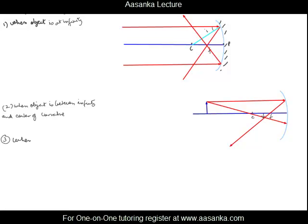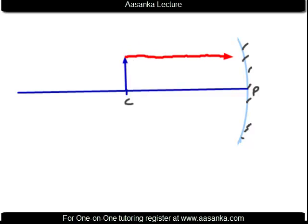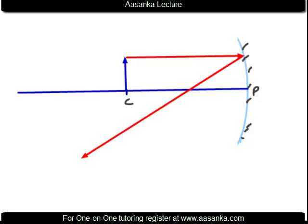The third case is when the object is at the center of curvature. In this figure, we have the center of curvature and the pole. With the object placed at the center of curvature, we again use the first ray: a ray parallel to the principal axis which, after reflection, will pass through the focus. This is one ray we can always take in any situation.